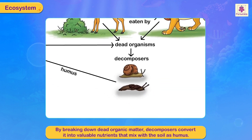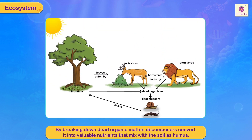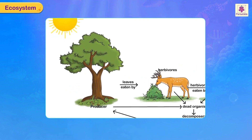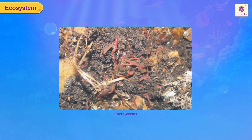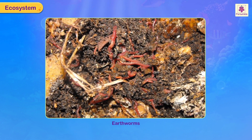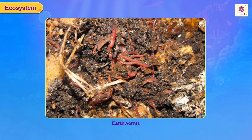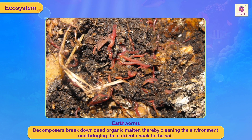By breaking down dead organic matter, decomposers convert it into valuable nutrients that mix with the soil as humus. This is readily absorbed by the plants for making food. Decomposers play a very important role in nature because they break down dead organic matter, thereby cleaning the environment and bringing the nutrients back to the soil.